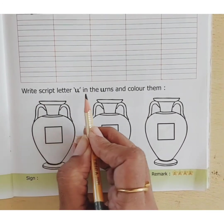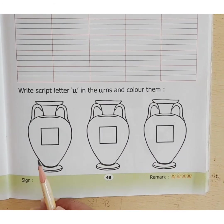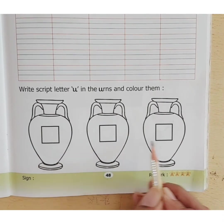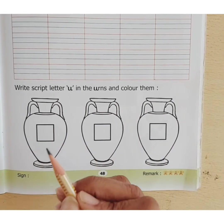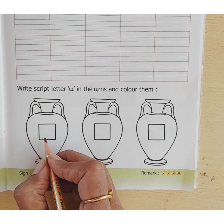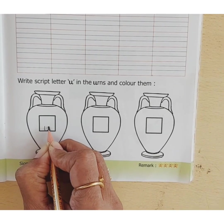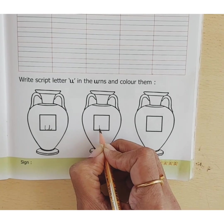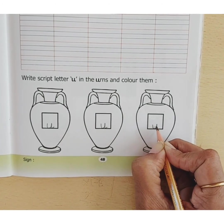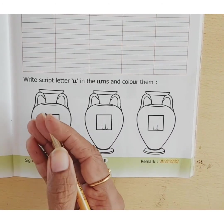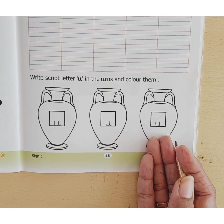Write script letter U in the urns and color them. Kids, some urns are given here and inside these urns there are small boxes. You have to write script letter U in these boxes. Like this, you will write script letter U in all these boxes. And once you finish, you have to color all these urns. You can color them of your own choice. Okay, kids? Bye-bye.